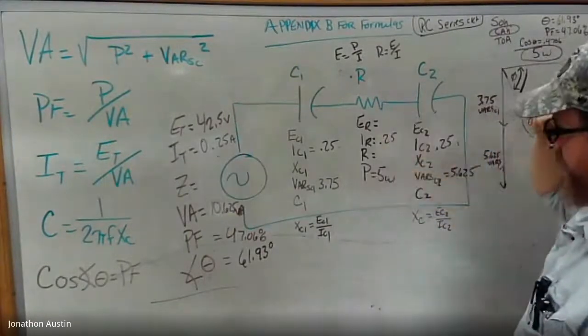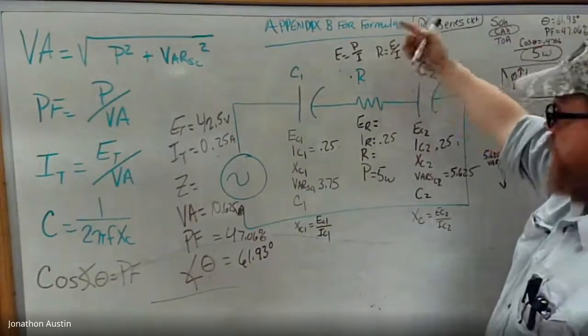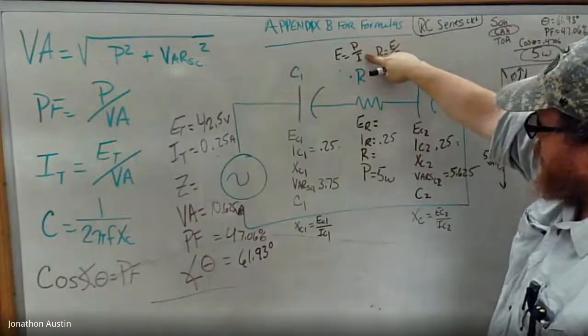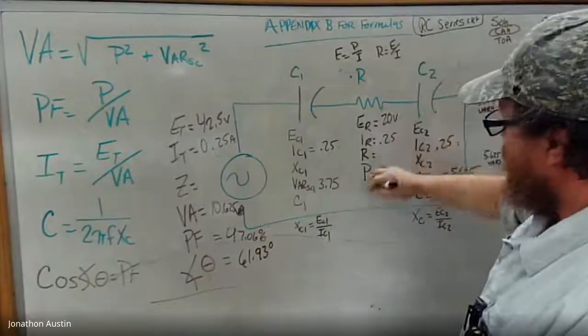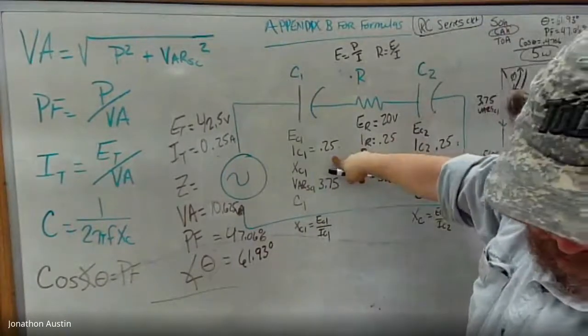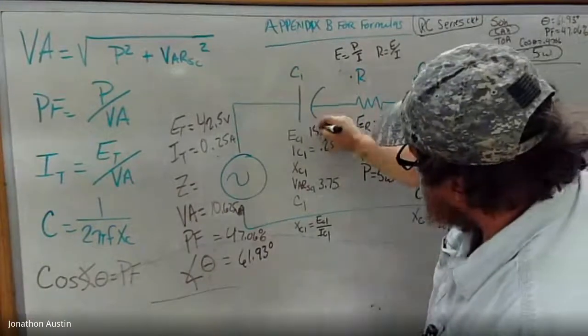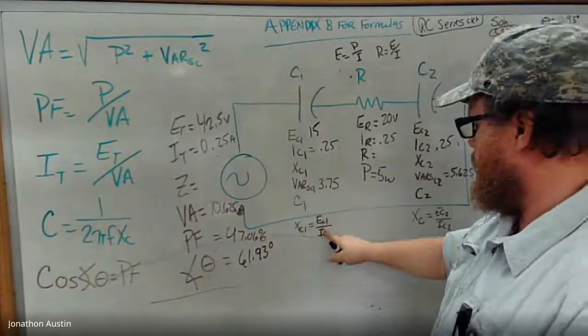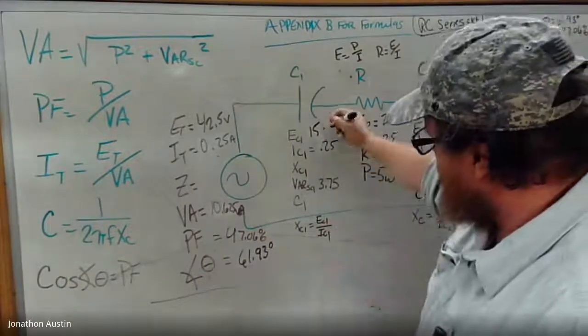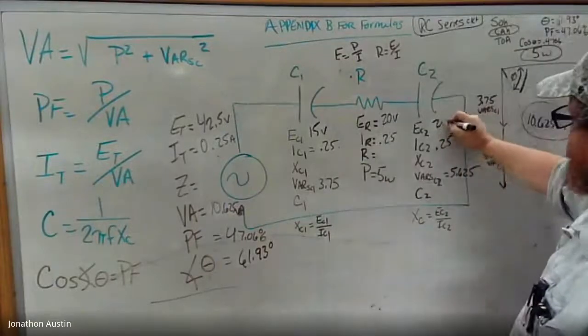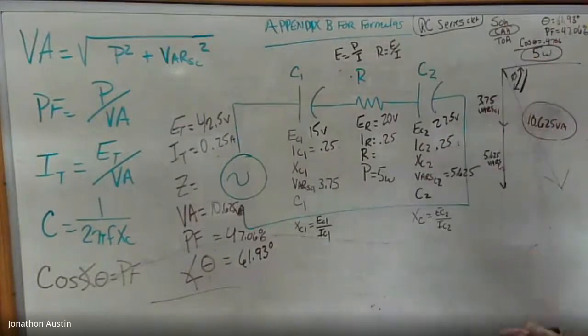And then with this I go back and I use power formula in Ohm's Law. P divided by I will give me my E, and that's going to give me 20 volts. And in this location I'm going to get 15 volts because you're going to use XC divided by EC. XC equals EC divided by IC, and that's going to give you 15 volts. And then over here you're going to get 22.5 volts. So with that you have plenty of working knowledge.